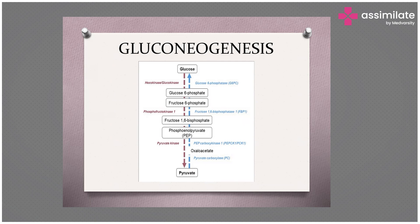Similarly, like pyruvate, many other non-carbohydrate precursors exist in the body, such as fatty acids and acetyl-CoA. Many precursors result in the formation of glucose, but pyruvate is the most important and most common precursor when it comes to the formation of glucose.